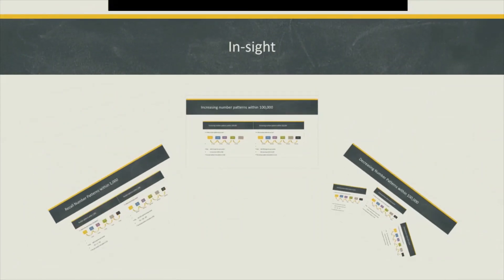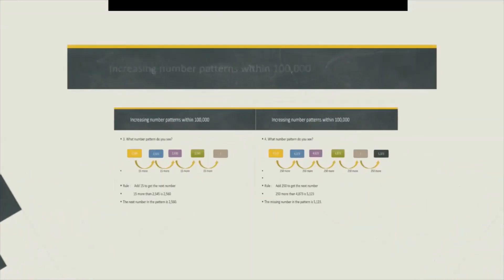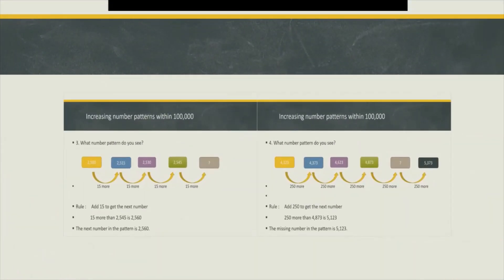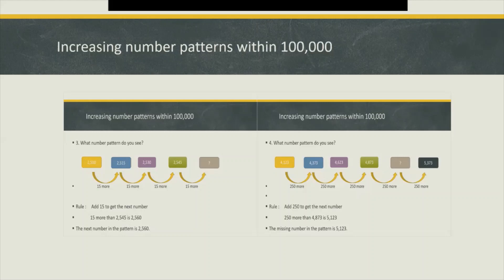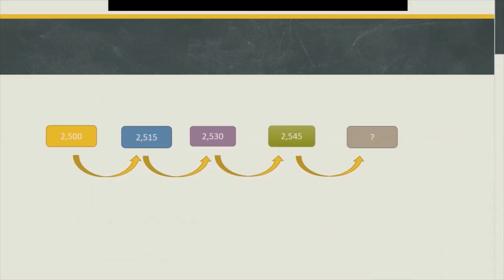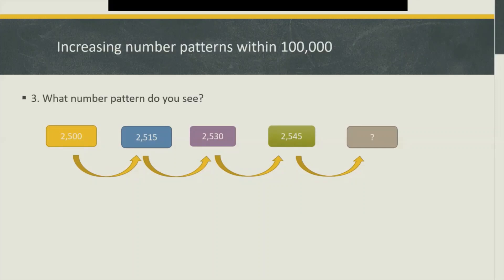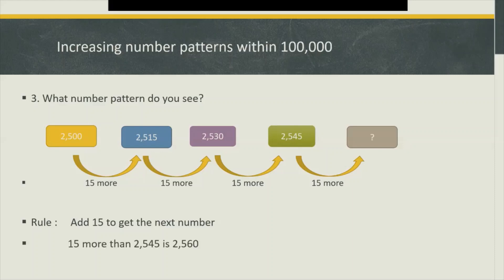Now let's talk about increasing number patterns within 100,000. Let's take a look at these numbers. What sequence can you see? What number pattern do you see? Fifteen more, right? That means we're going to add 15 to get the next number.